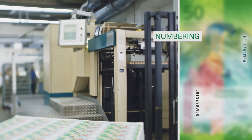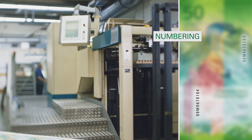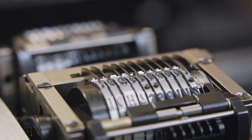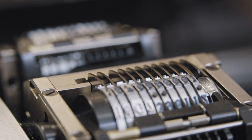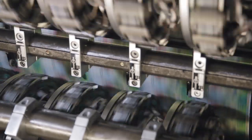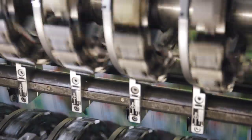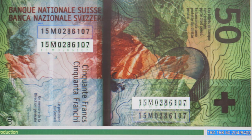The numbering press prints a 10-digit serial number on the back of the note. A combination of letters and numbers is applied using the letterpress printing technique. Special printing equipment ensures sequential numbering. Each banknote is thus unique and clearly identifiable.